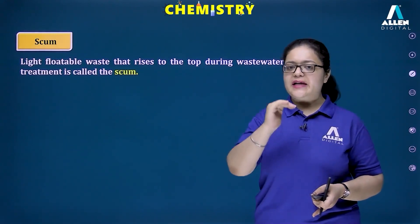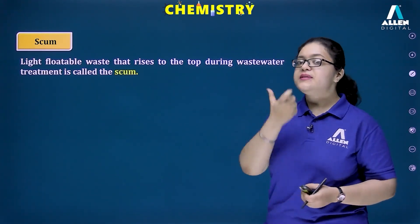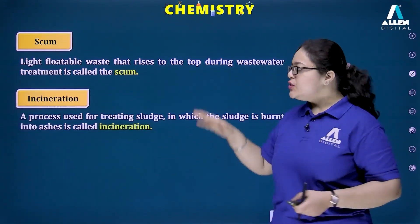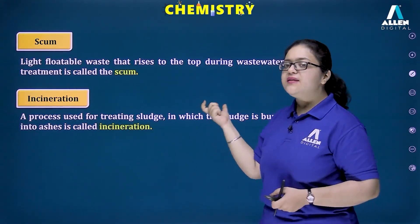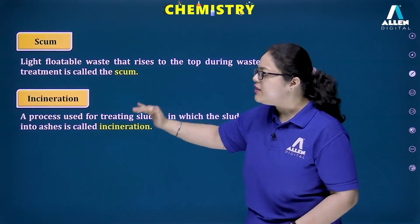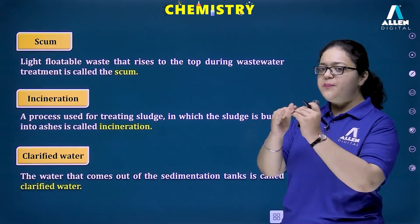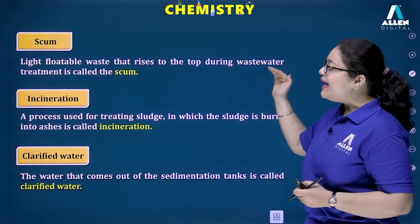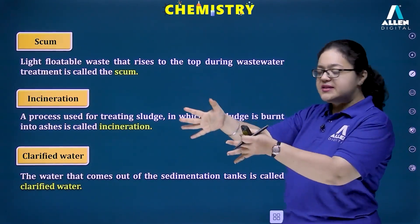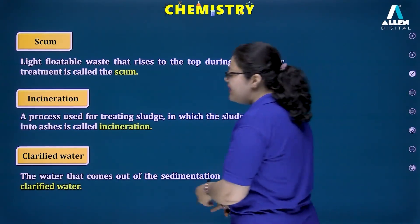Scum is the light, floatable waste — such as oil, grease, and fat particles — that rises to the top. Incineration is a form of treating sludge where the waste is directly burnt into ashes; it is a kind of combustion process and an effective method to treat waste. Clarified water is the clean water left behind after removing heavy impurities as sludge and light floatable waste as scum; it is ready to be transferred into the secondary process.